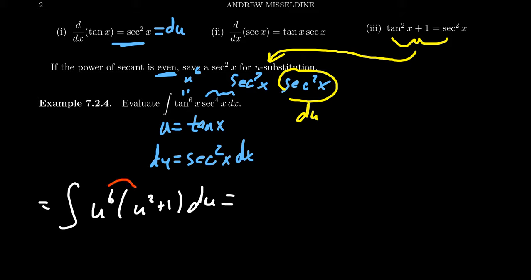Distributing the u to the sixth throughout here, we have a very nice polynomial u to the eighth plus u to the sixth du.